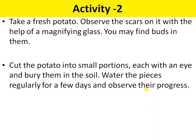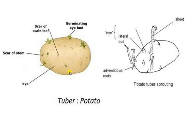Take a fresh potato and observe the several scars on it with the magnifying glass. You may find buds in those scars. Then cut the potato into two or four small portions, each with an eye, and bury them in the soil. Give them water every day regularly for a few days. After a few days, you will observe that these are the scars of the scale leaves, and these are the eye buds — the germinating eye buds.